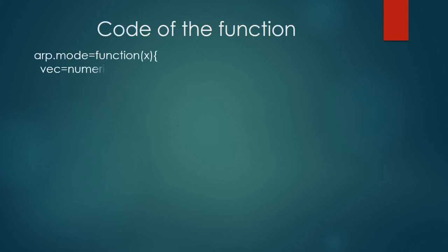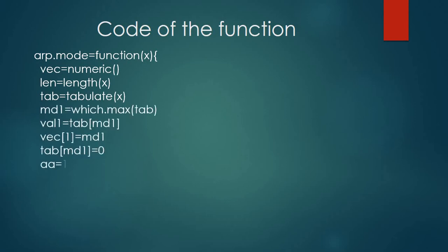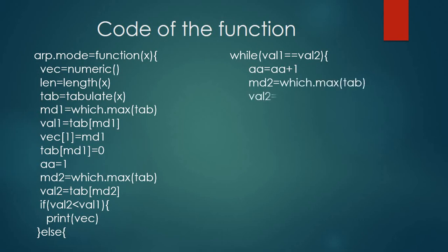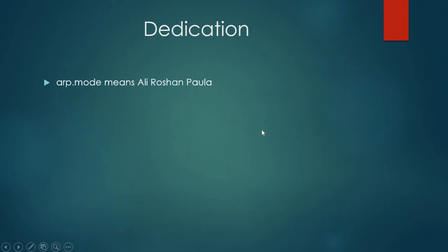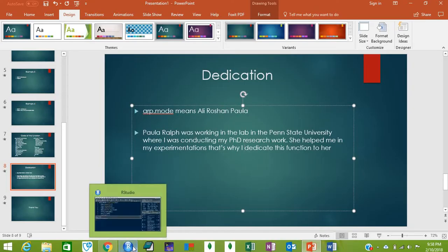That's why I wrote a function that can calculate the mode in R. The name of the function is `arp.mode`. You can copy this code from here into your R Studio editor, run it, and then use it. This function is dedicated to Paul Aral, who was working in the lab at Penn State University where I was conducting my PhD research. She helped me in my experimentations, so I dedicate this function to her.